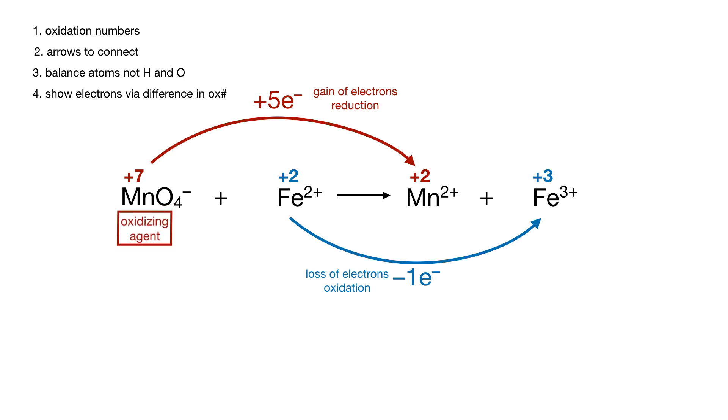You can also go ahead and label which ones are the oxidizing agent and the reducing agent. Notice the permanganate's the oxidizing agent, and iron 2's the reducing agent.